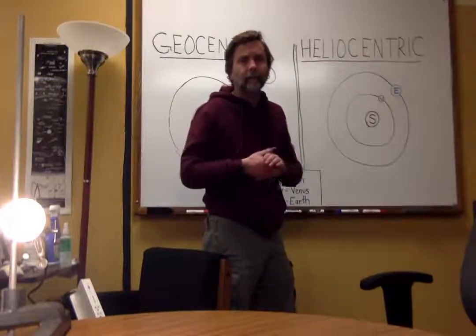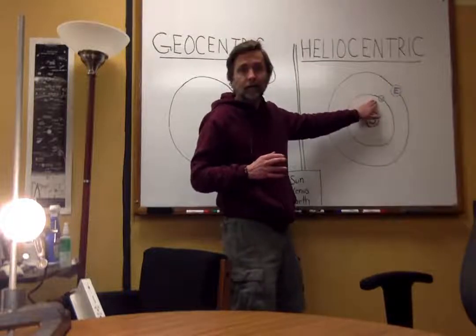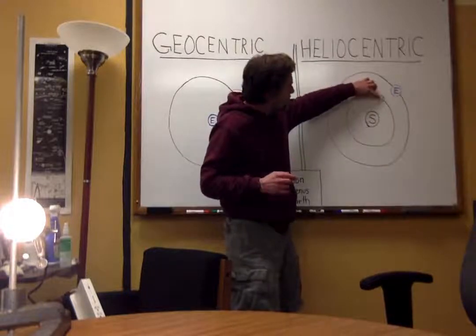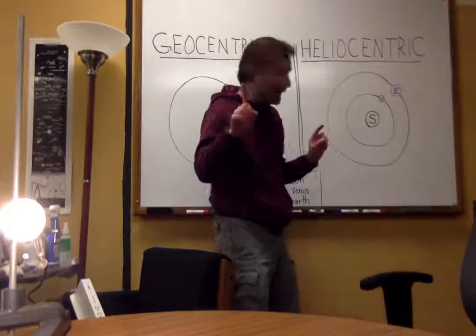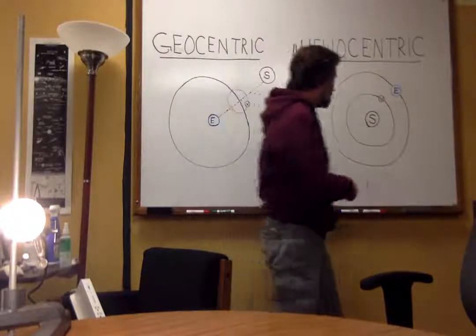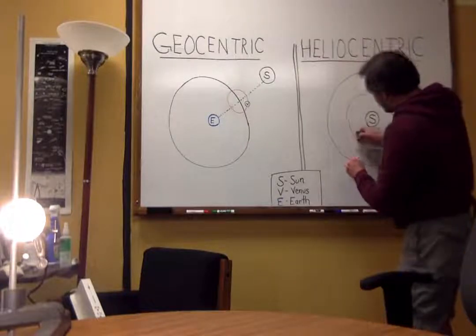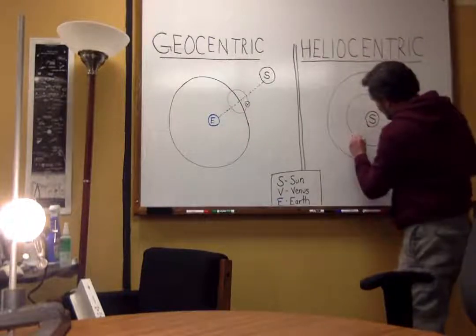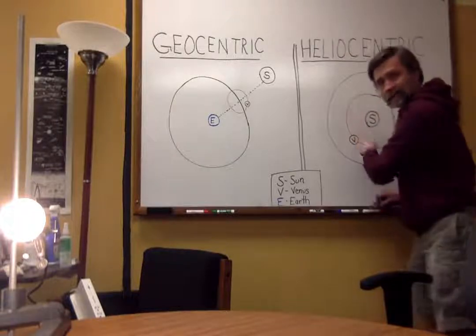Which is correct. Well, in the heliocentric model, Venus would be between the Earth and the Sun, sometimes. But, the difference is, that at other times, Venus could orbit around to the other side of the solar system. And be on the opposite side of the Sun.